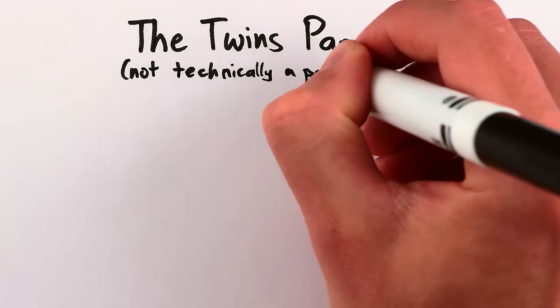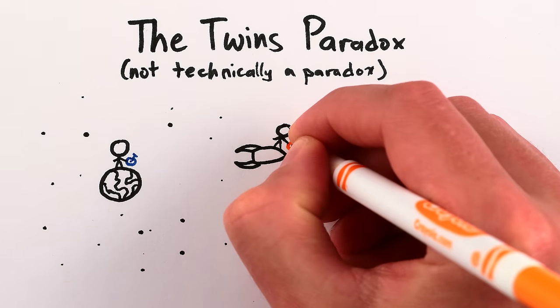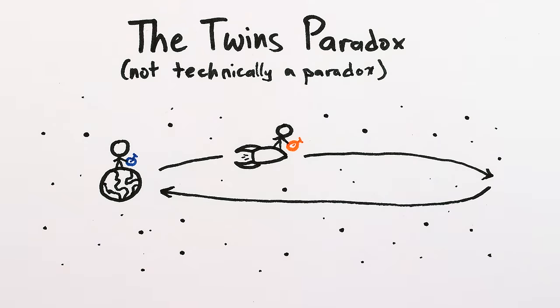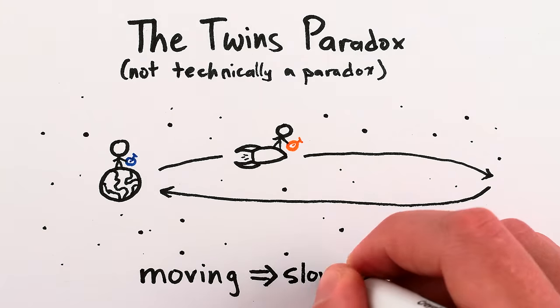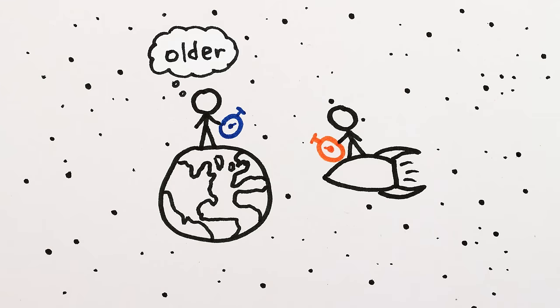The setup for the twins paradox is as follows. Suppose I sit on Earth while you head off on a rocket ship at a constant speed for a while, then turn around and come back. We know that moving things experience time more slowly, so I'll think that when you get back, you should be younger than me.